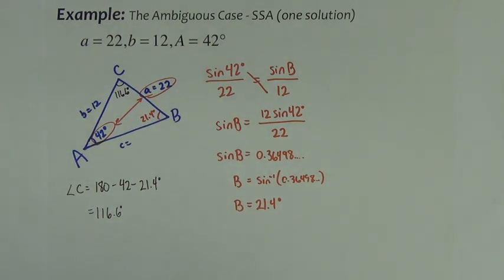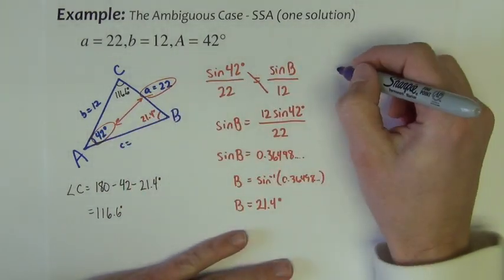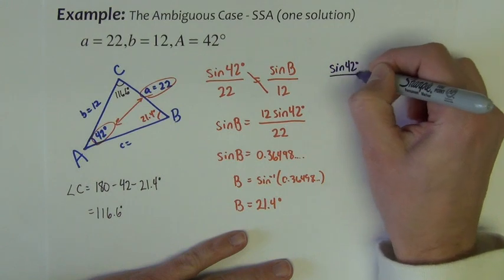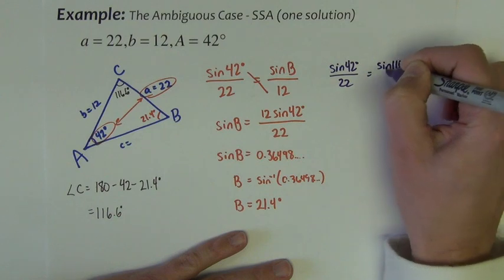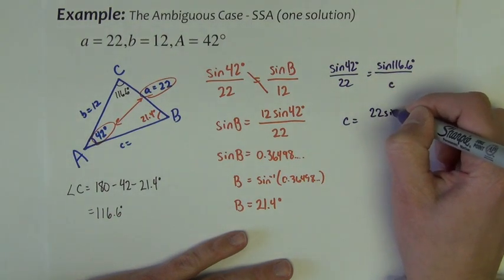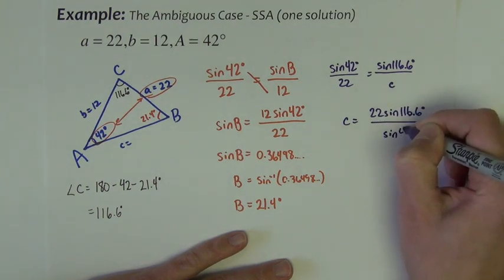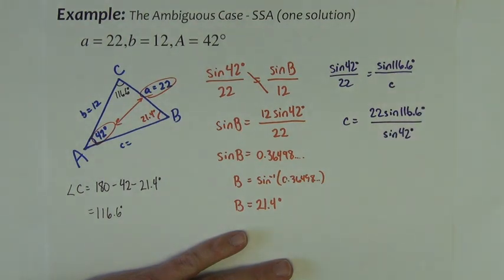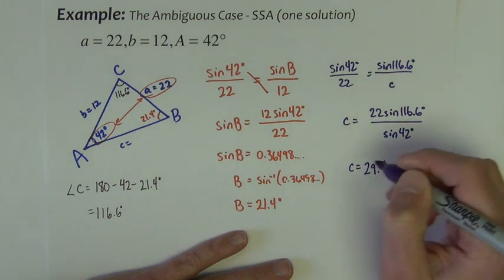And now we need to find side c. I'm going to again use my AA pairing. Sine of 42 degrees over 22 is equal to sine 116.6 degrees over c. So c is 22 sine 116.6 degrees over sine 42 degrees. And I get little c to be 29.4.